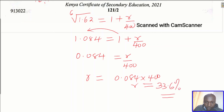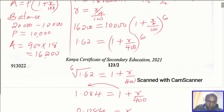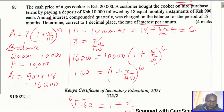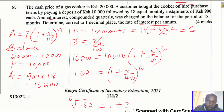And that is simply how we work out that question — by first identifying the compound interest formula, then determining what the amount is, what the principal is, what the rate is, and what period we are going to use. Finally, we got the answer. That is how I would solve that question.